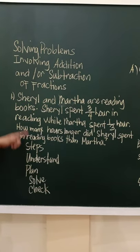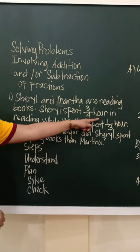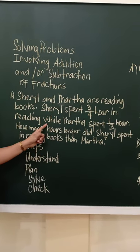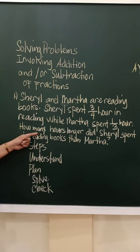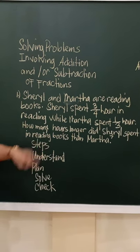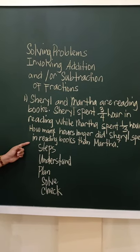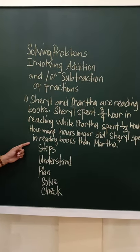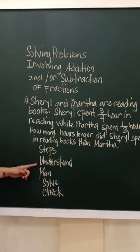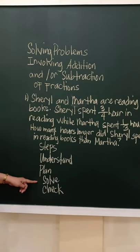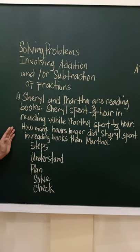Cheryl and Martha are reading books. Cheryl spent three-fourth hour in reading while Martha spent one-third hour. How many hours longer did Cheryl spend in reading books than Martha? In problem-solving children, we have to follow the steps. So we have here the four steps: understand, plan, solve, and check. We are going to apply the steps in solving problem number one.